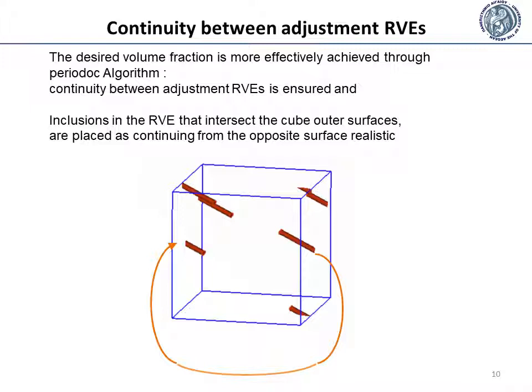Periodicity across surfaces means that continuity between adjacent RVEs is ensured. The way this is achieved is that inclusions in the RVEs that intersect the cube's outer surfaces are cut, with the remaining inclusion being placed as continuing from the opposite surface, as shown in the figure. Additionally, the algorithm takes into account a minimum separation distance between the surfaces of any two inclusions, ensuring that the desired volume fraction is more effectively achieved and that fiber dispersion is more realistic.